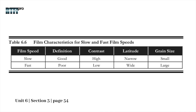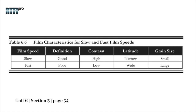First, for the slow film, if you have good definition, it's because the grain size is small. Good definition would be like D2, D3, D4. But with good definition, contrast is high, which makes latitude narrow.